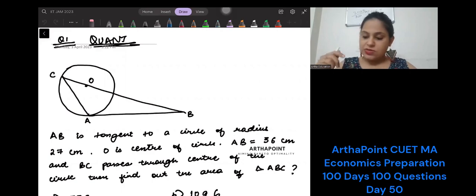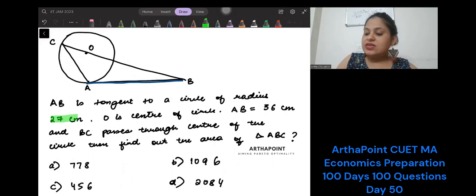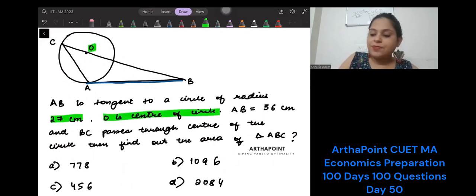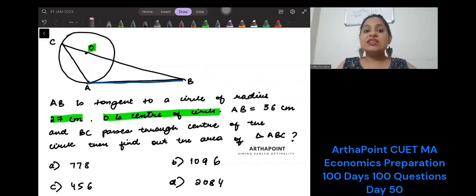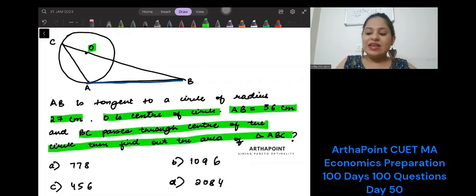The first question for the day is this. It says AB is tangent to the circle. It is tangent to the circle, and the circle is of radius 27. O is the center of the circle. The radius of the circle is given to me as 27. It says AB is 36, and BC passes through the origin, through the center of the circle. Find the area of this triangle ABC.